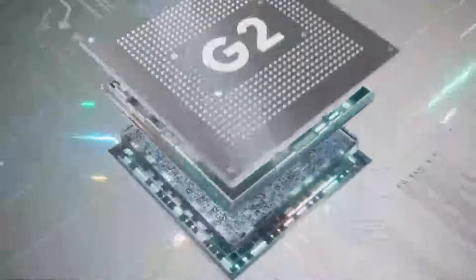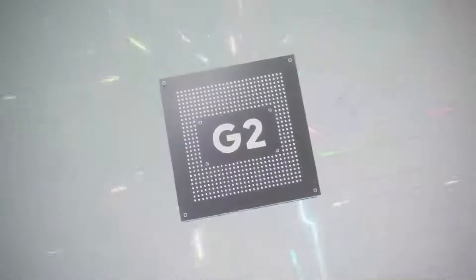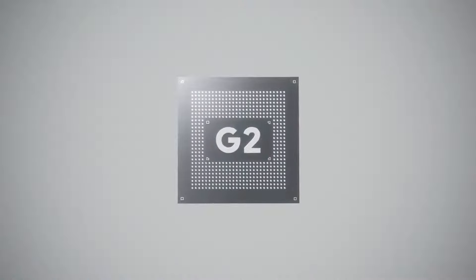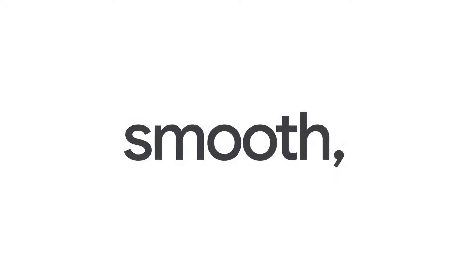The Pixel 7a was custom built with Google's most advanced AI to make Pixel not only super smart, but also super helpful. And to make everything run fast, smooth, efficient.